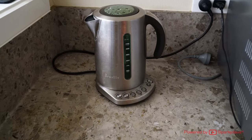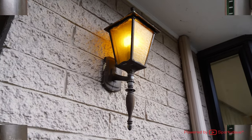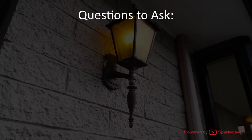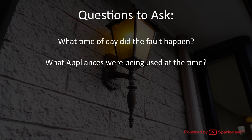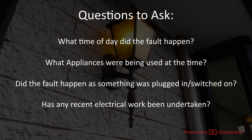The first point of clearing an unidentified RCD fault is to focus on appliances and outdoor lighting. Obtain a brief history from the customer — include what time of day the fault happened, which appliances were being used at the time, if they realized it occurred when they plugged something in, or if any electrical work had recently been undertaken, as these questions may help narrow down what the fault may be.